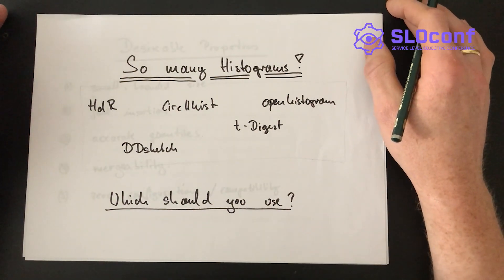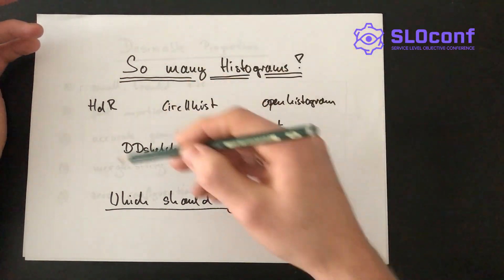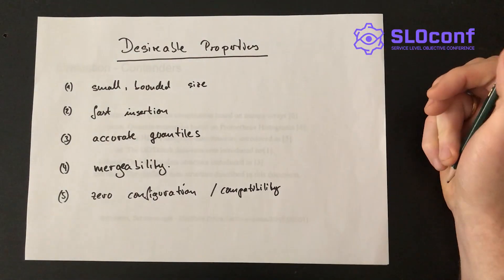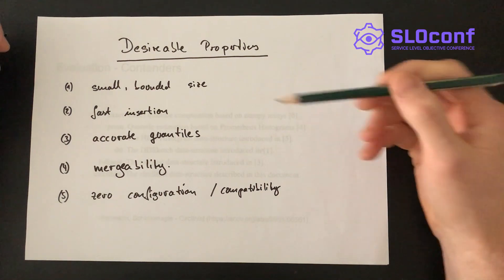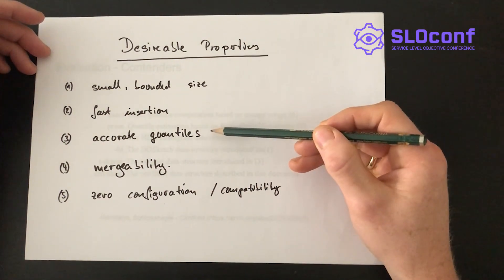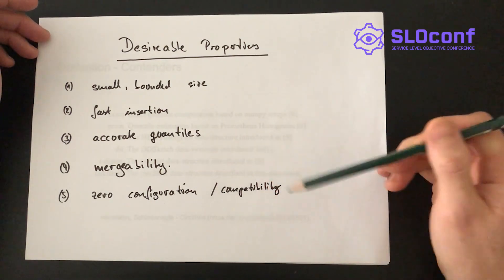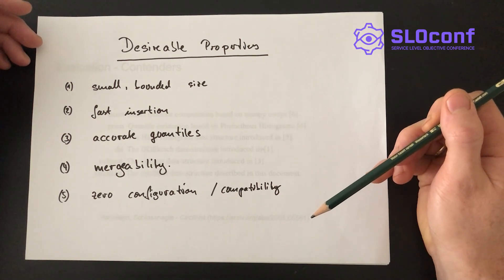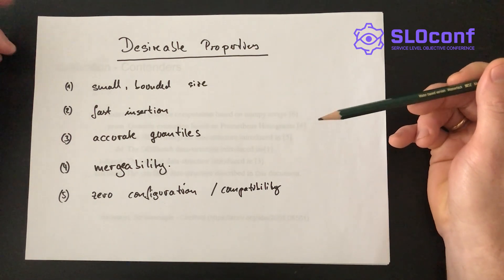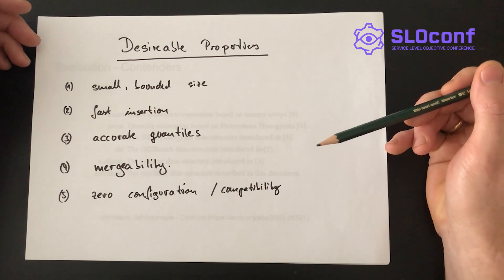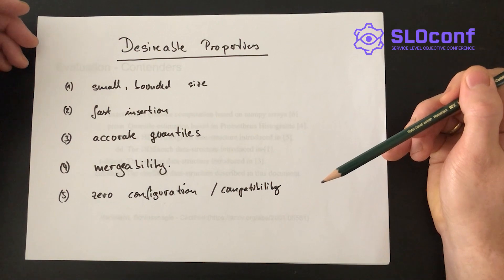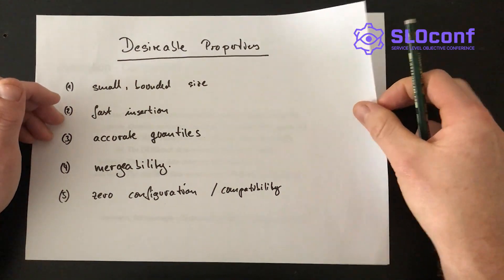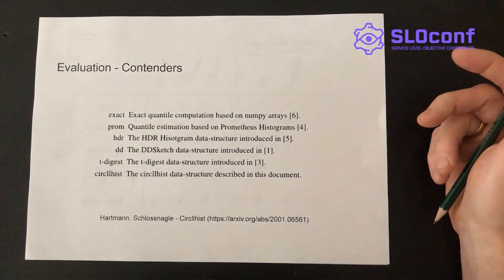Now that we've gone through the history, you have a bunch of histogram options at your disposal, and you might be asking which one is better and which one to use. Here are my desirable properties for histograms: they should be small, insertion should be fast, you should get accurate percentiles, and they should be mergeable. Additionally, zero configuration is a big benefit — first for usability, so users don't have to configure the histogram, and second for compatibility: two histograms from different sources will always be compatible and mergeable if neither required configuration.